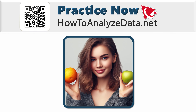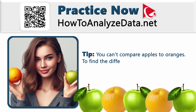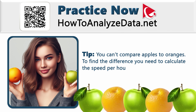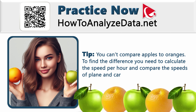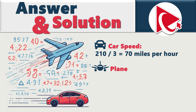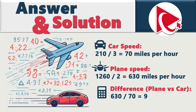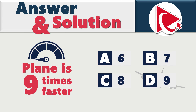You can't compare apples and oranges, so to find the difference we need to calculate the speed per hour and compare. The car's speed: 210 ÷ 3 = 70 miles per hour. The plane's speed: 1,260 ÷ 2 = 630 miles per hour. The difference: 630 ÷ 70 = 9. So the plane is 9 times faster than the car. The correct answer is choice D: 9.